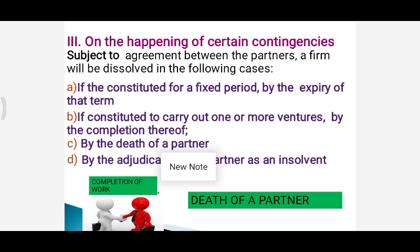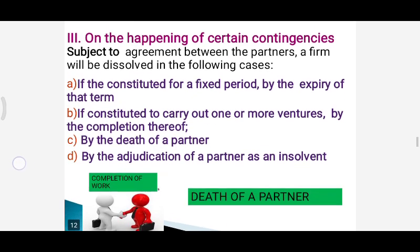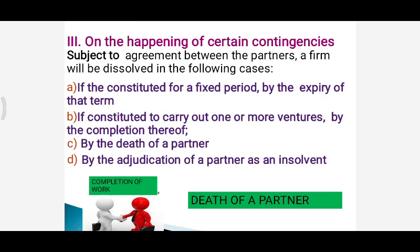Next is by death of a partner — if there were only two partners and one dies, in that case also the firm itself dissolves. Next is by adjudication of a partner as insolvent — if a partner becomes insolvent and the firm had only two partners, in that case also the firm itself is dissolved automatically.